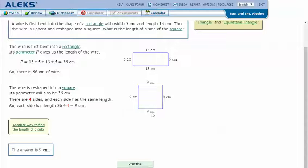Because 9 times 4 is 36, and 13 plus 5 plus 13 plus 5 is also 36. So the length of one side of the square is 9. Let's try another one.